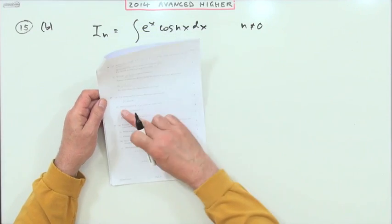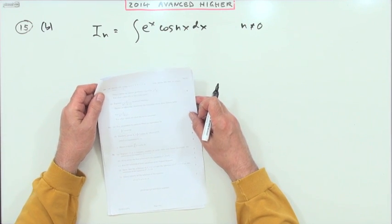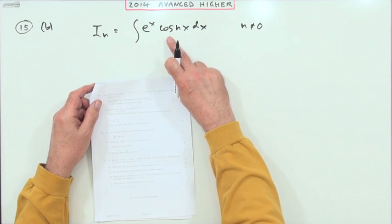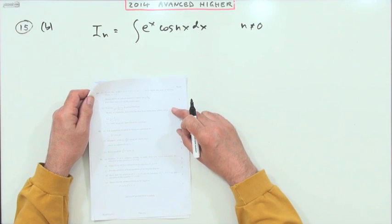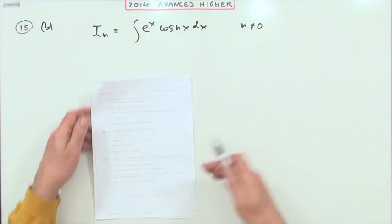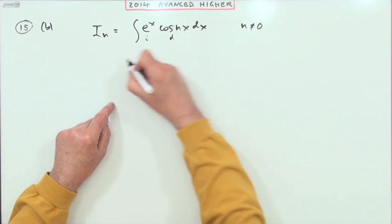And so part b, similarly. See, there's another four marks for doing more or less the same thing. Find an expression for I_n, with the only difference this time is it's cos of this multiple of the angle. A little note at the side just saying, of course, that n isn't zero, because otherwise it would just be e^x and that would be the end of it. Well, same as before: integrate, differentiate.